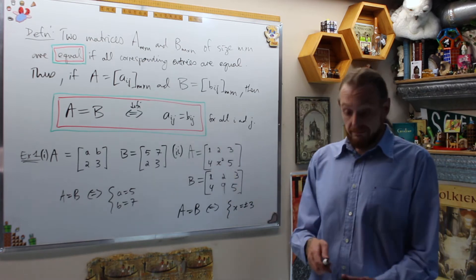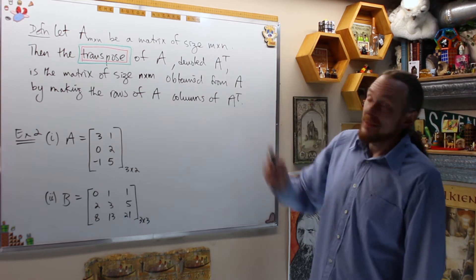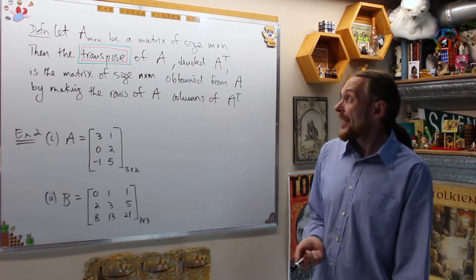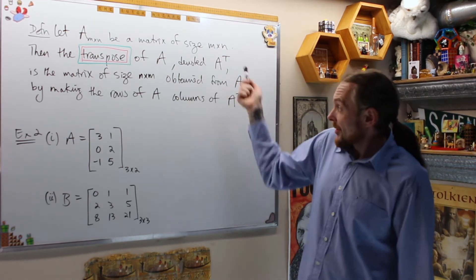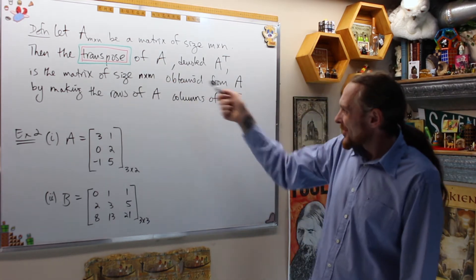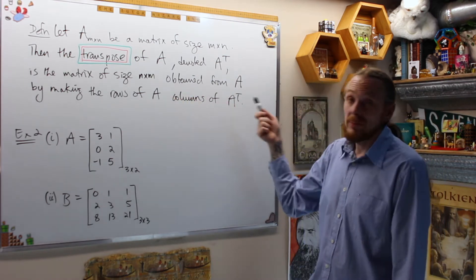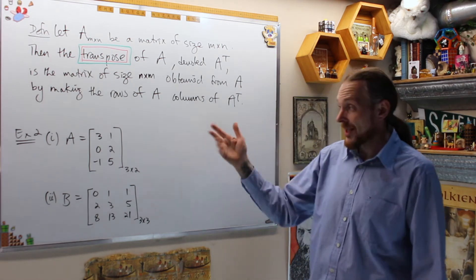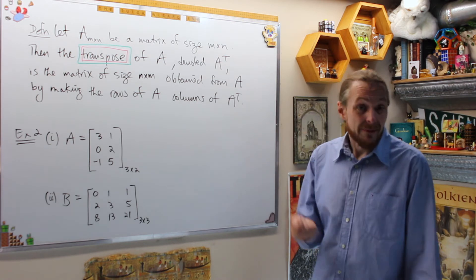Okay next, let A be a matrix of size M by N. Then the transpose of A denoted A to the T, this is not an exponent, this is just our notation unfortunately, is the matrix of size N by M obtained from A by making the rows of A columns of A transpose and vice versa. Let's try that in an example. This one's actually not that bad but we need it eventually for an algebraic formula for the inverse of a matrix.